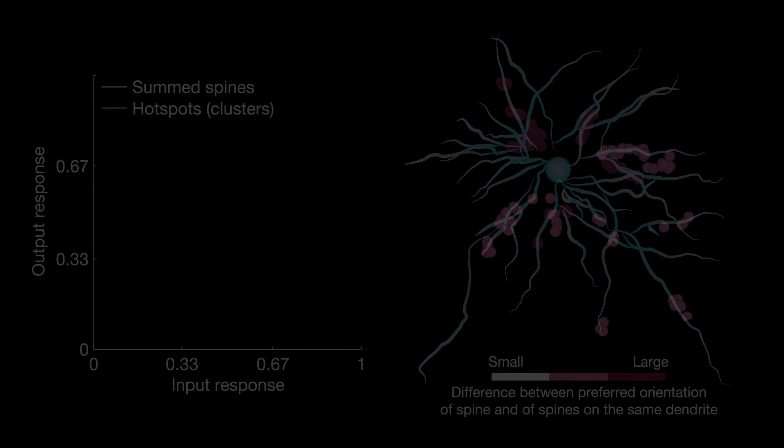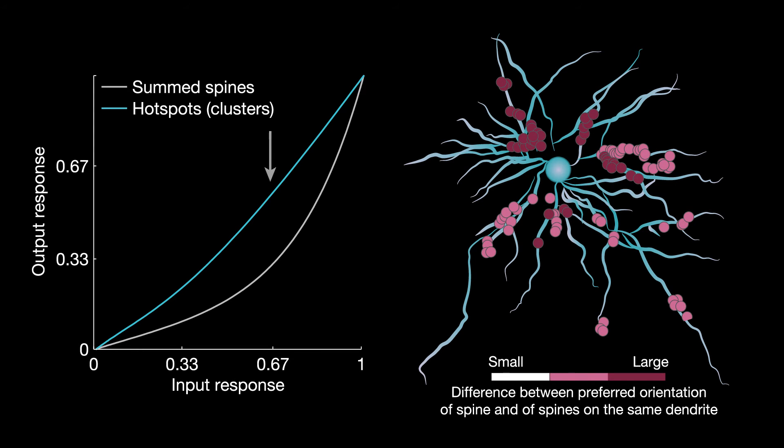As a result, the properties of the clustered inputs had a much stronger influence on the neuron's overall orientation preference and selectivity. The non-clustered, non-amplified inputs tuned to non-preferred orientations were filtered out.